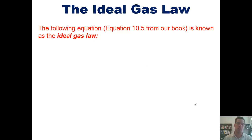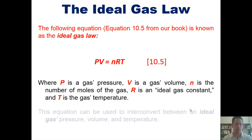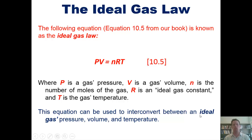The following equation is known as the ideal gas law: PV = nRT. Where P is a gas's pressure, V is its volume, n is the number of moles of the gas, R is the ideal gas constant, and T is the gas's temperature. This equation can be used to interconvert between any ideal gas's pressure, volume, and temperature.